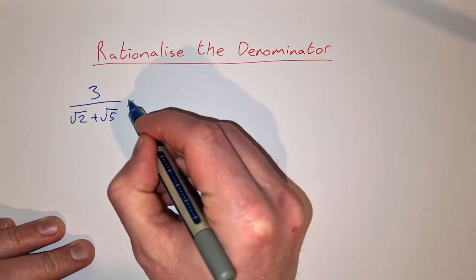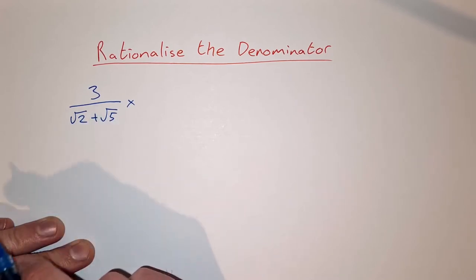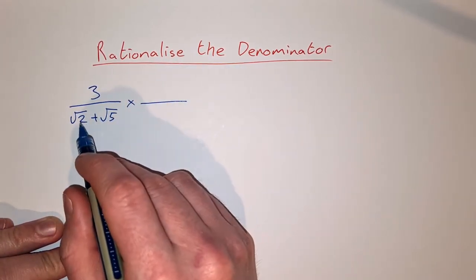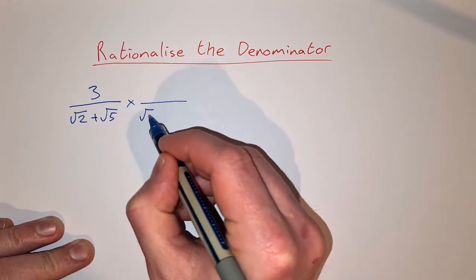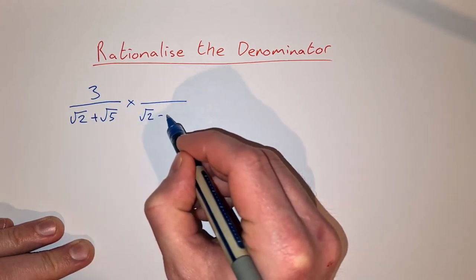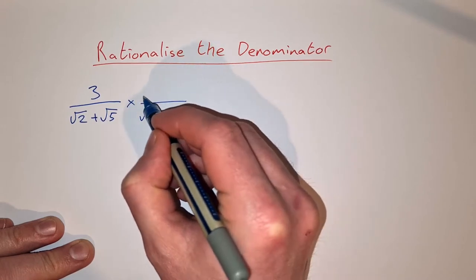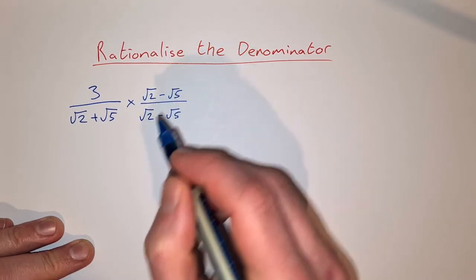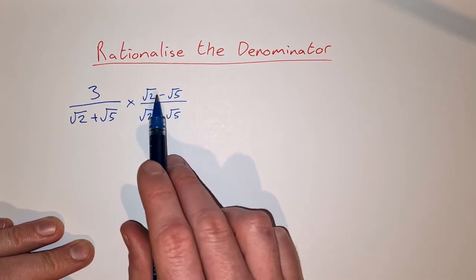So to do that we multiply by the conjugate of the denominator. The conjugate is just the denominator but we change the sign of the second one. So we multiply by root 2 minus root 5 and we do that on top and on bottom.